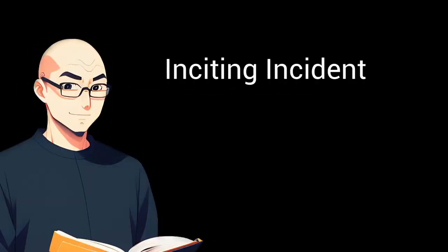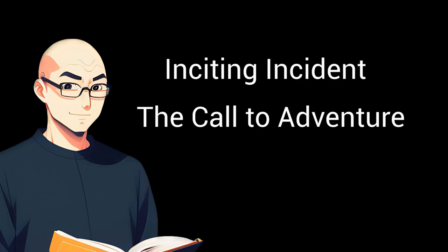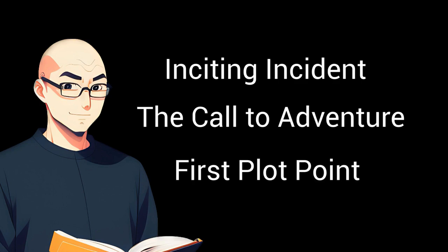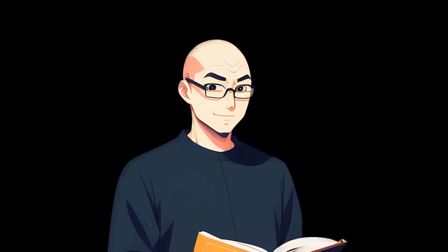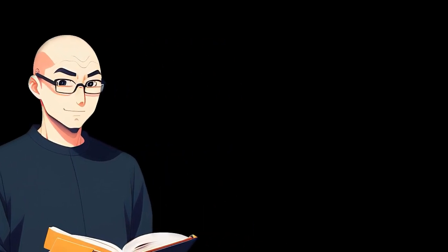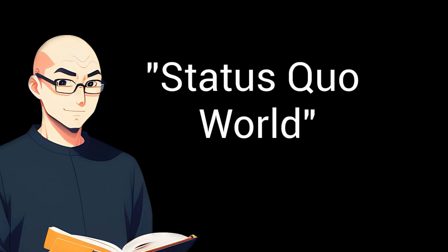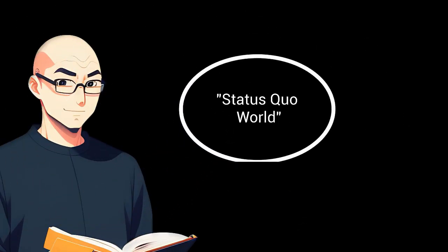The fourth story beat of Act 1 is the Catalyst — other names you might know it by are the Inciting Incident, the Call to Adventure, or the First Plot Point. So far you have introduced who your character is as a person and the world they exist in, which is called the Status Quo World. This world is where your hero is comfortable, where their flaws can exist in a benign state. Now it is time to introduce something from outside of the Status Quo World to shake the very foundation your character stands upon.